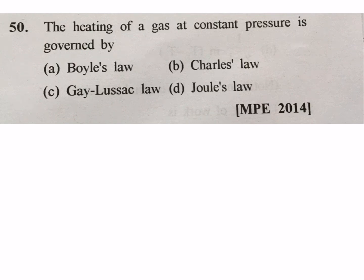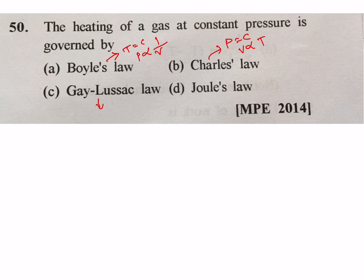Question: the heating of a gas at constant pressure is governed by which law? In Boyle's law, temperature is constant and pressure is inversely proportional to volume. In Charles' law, pressure is constant and volume is directly proportional to temperature. In Gay-Lussac's law, volume is constant and pressure is directly proportional to temperature. In Joule's law, internal energy is directly proportional to temperature. So at constant pressure, this is Charles' law.